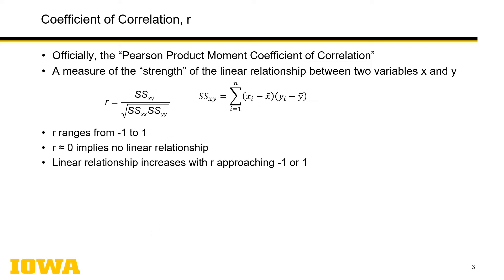So r does range from minus 1 to 1, where an r of 0 implies no linear relationship at all — there's no strength to it whatsoever. As the linear relationship increases with r approaching minus 1 or 1, so does the strength of the relationship itself.